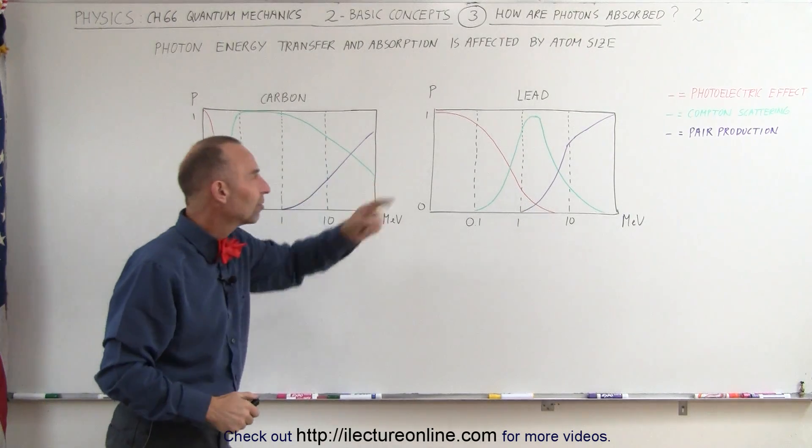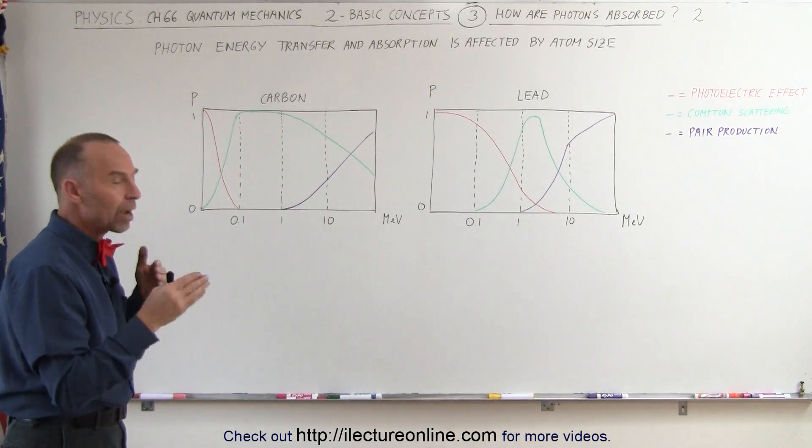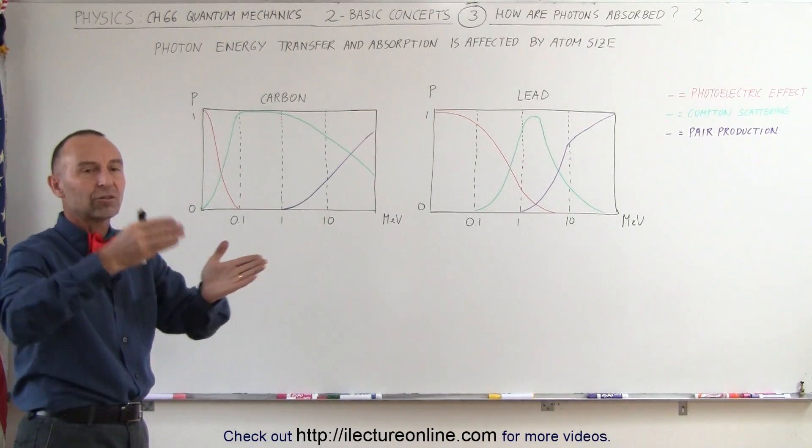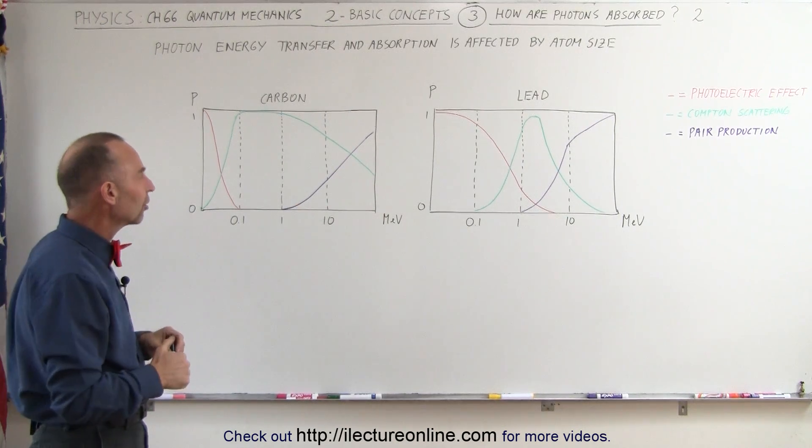The green line represents the Compton scattering effect where the energy is partially transferred to the electrons by scattering the electrons in one direction and the photons in the other direction.